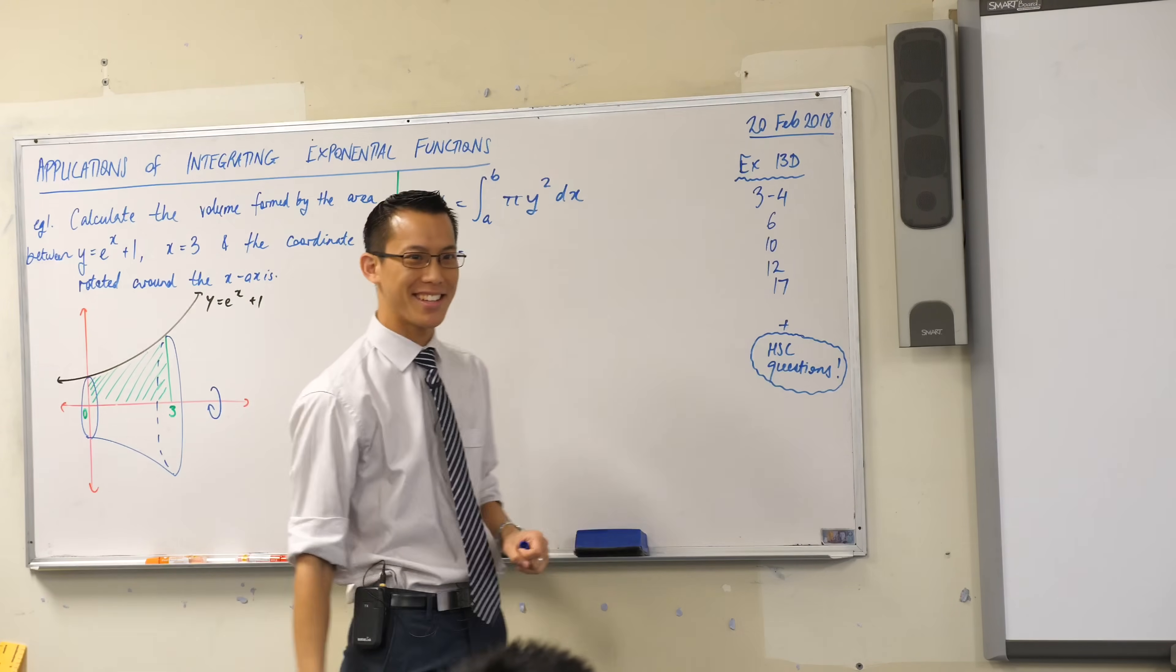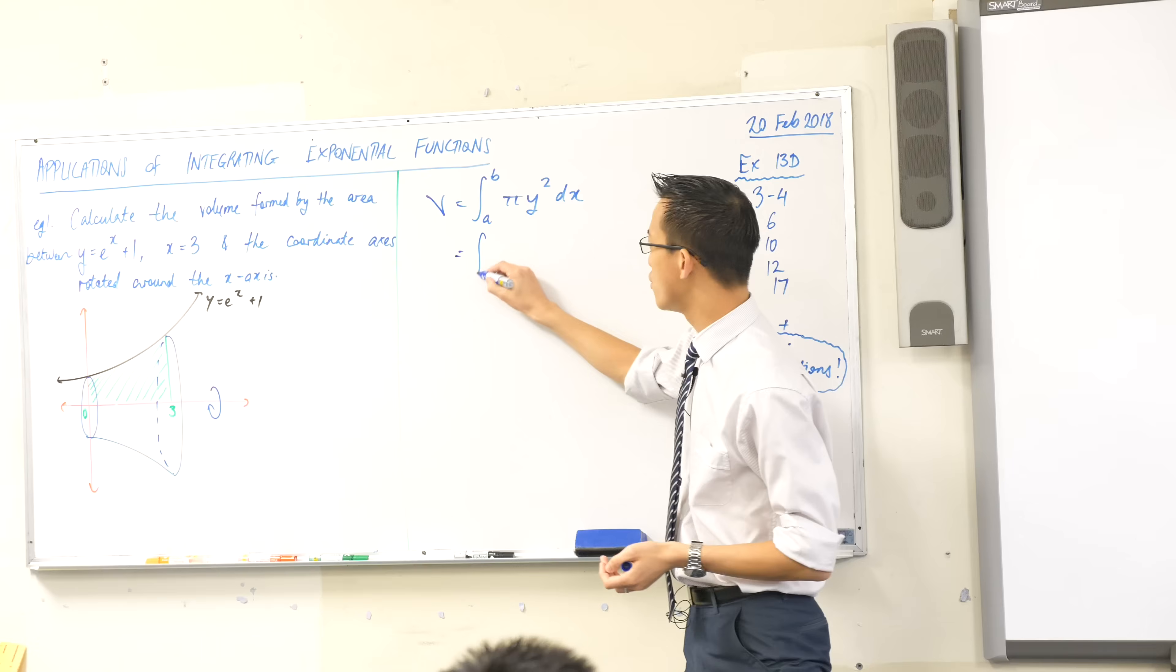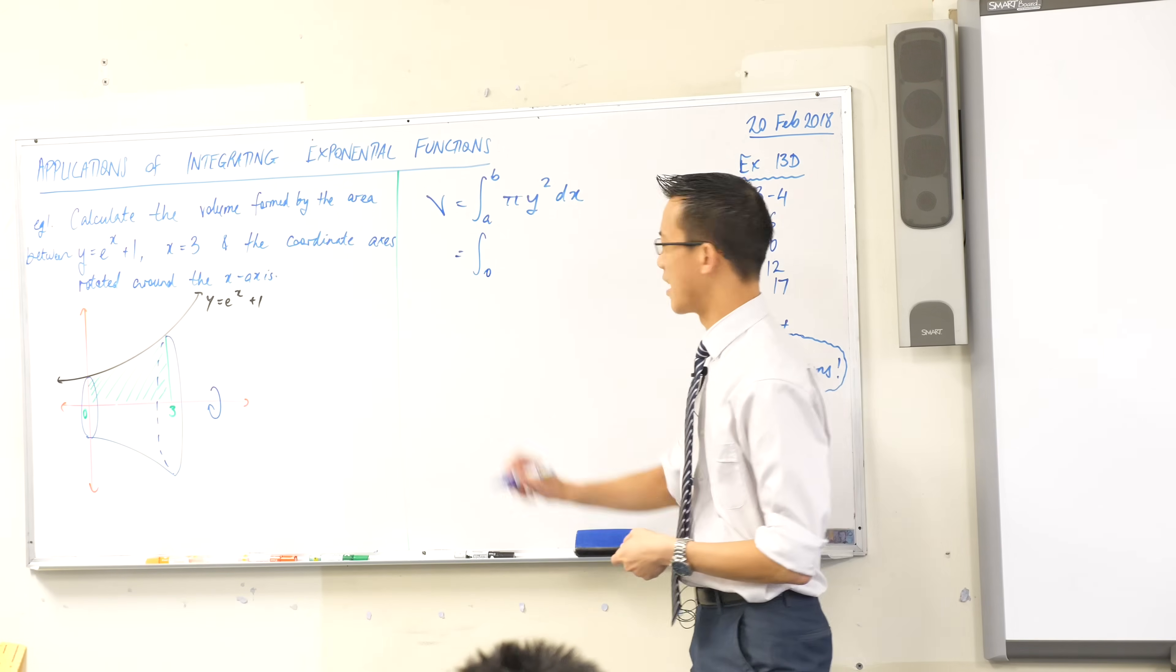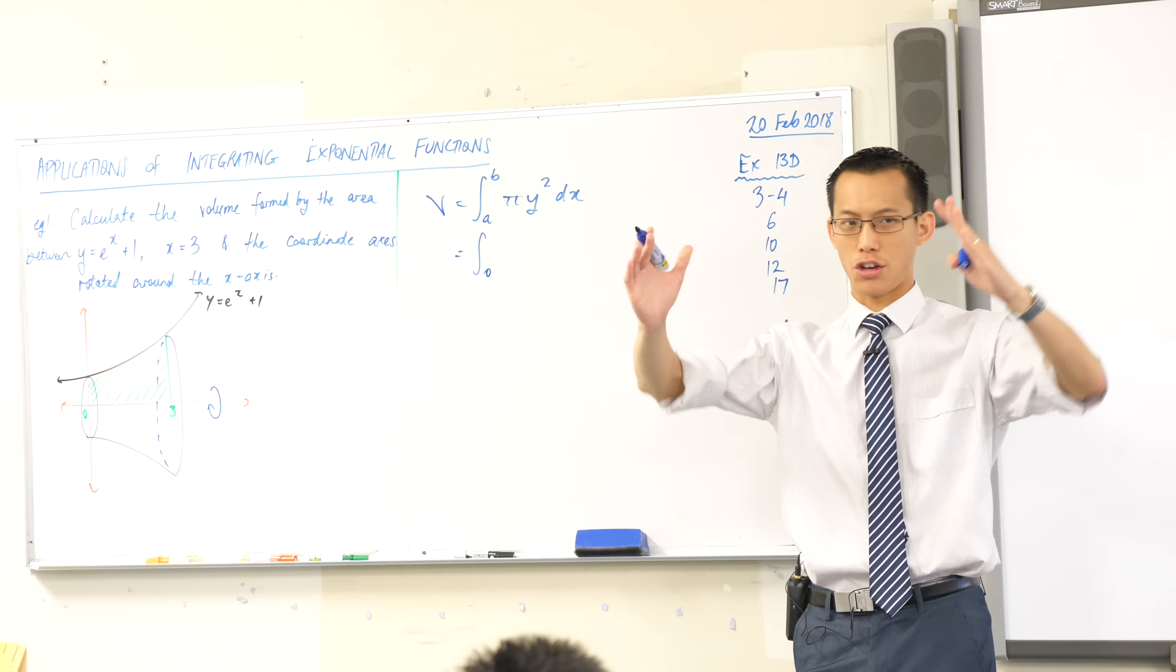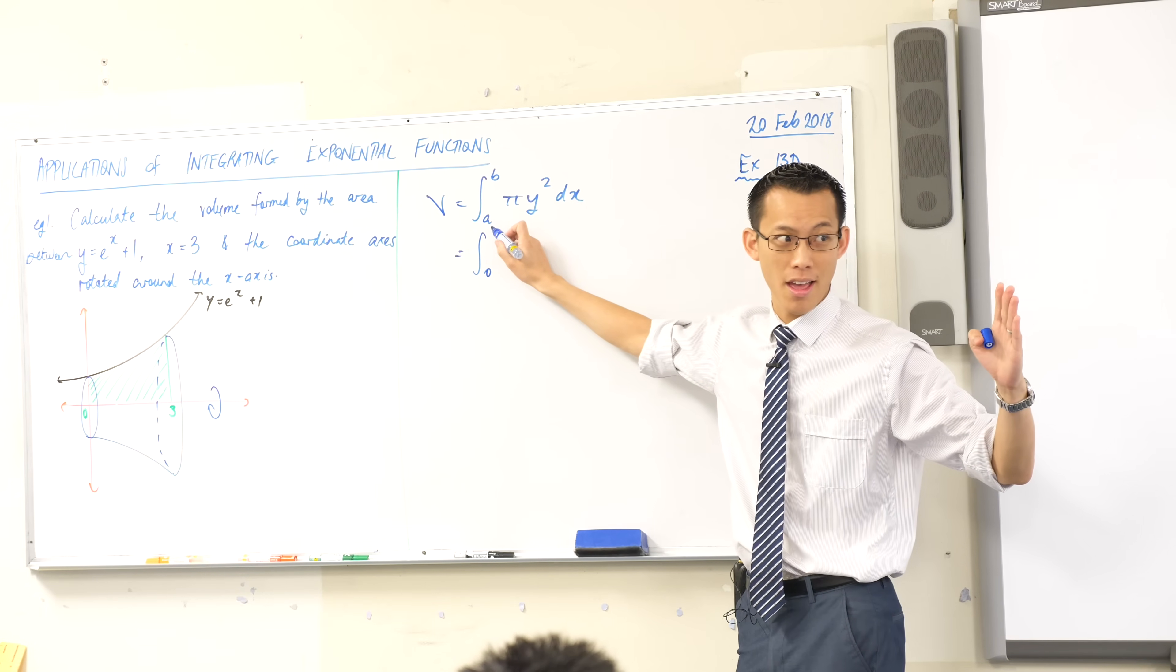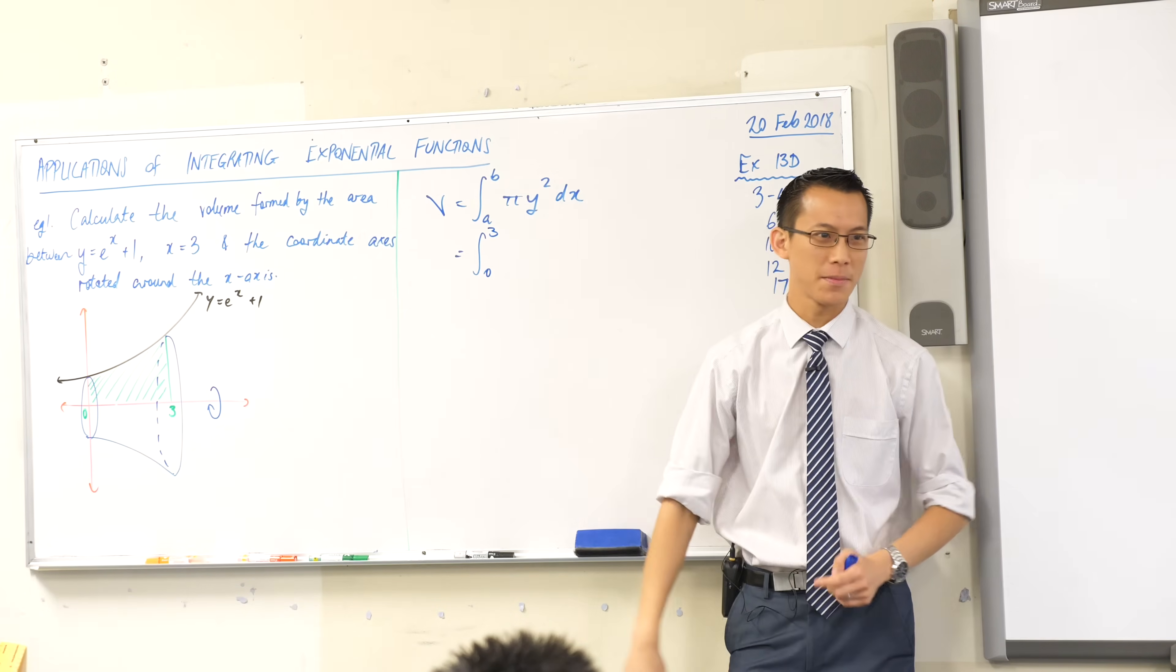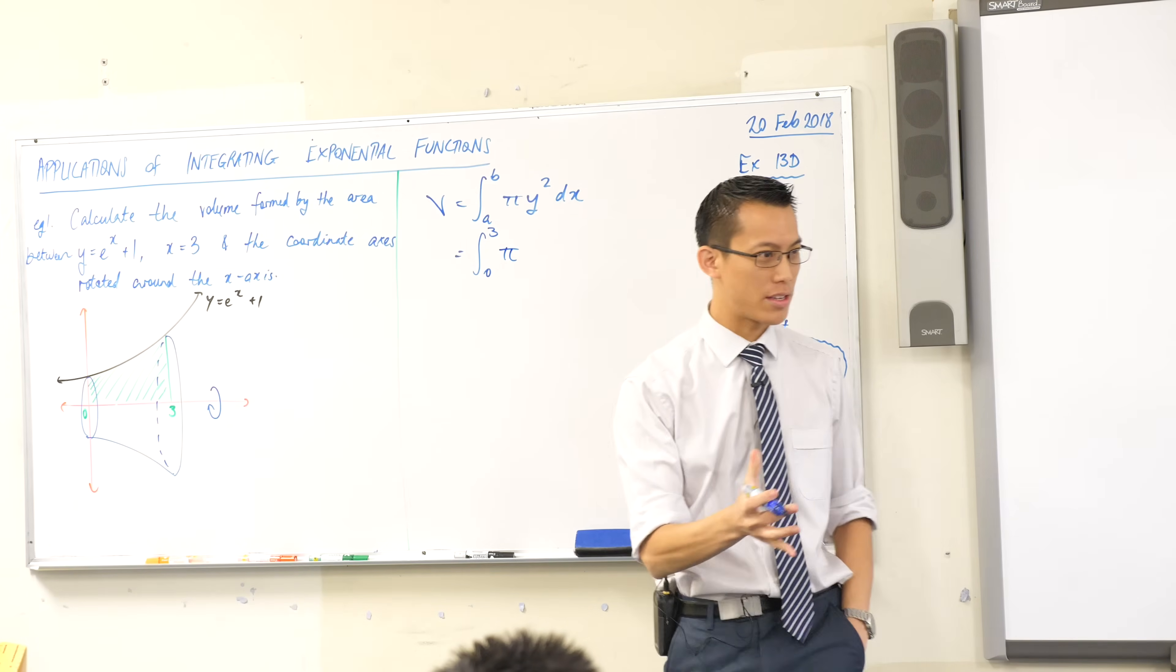Now in this particular case what have we got? Well I haven't told you explicitly what both of the boundaries are, so you have to find one of them. What's the lower boundary? It's just zero. I cheated and put it on my diagram, but the question itself sort of implies that when it says the coordinate axes. What's my upper boundary? It's 3. So I'm going from 0 to 3, the pi is still there.